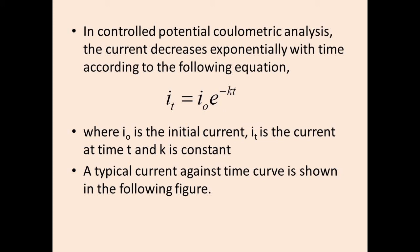In the equation, k is the constant and I₀ is the initial current at the start of the electrolysis.